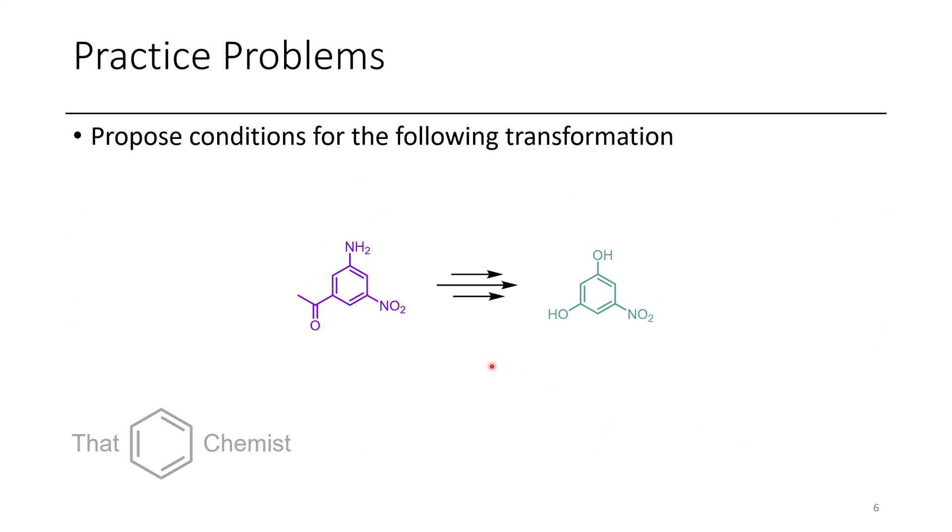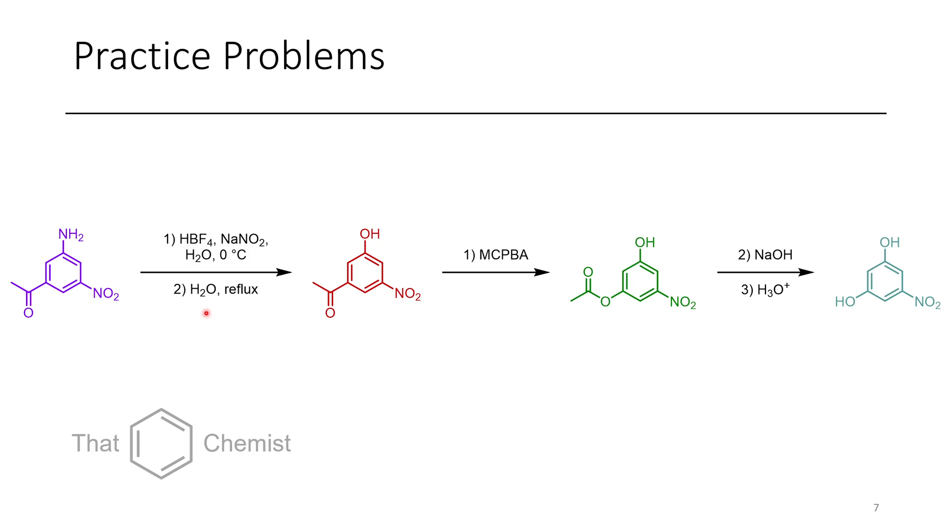Now in the final problem, we start with this ketone-containing aniline with a nitro group, and we want to convert this to a resorcinol, which is a 1,3-diol on a benzene ring. And so the route that I would propose is first we're going to convert this aniline to a diazonium, then we're going to treat it with water to get the phenol. And you might be a little bit concerned of that ketone in the presence of this strong of an acid, and so if we really needed to, we could protect that ketone and then unmask it again afterwards. But because the unmasking and masking process of ketones involves a strong acid, I assume it would be okay to use HBF4 in this context.